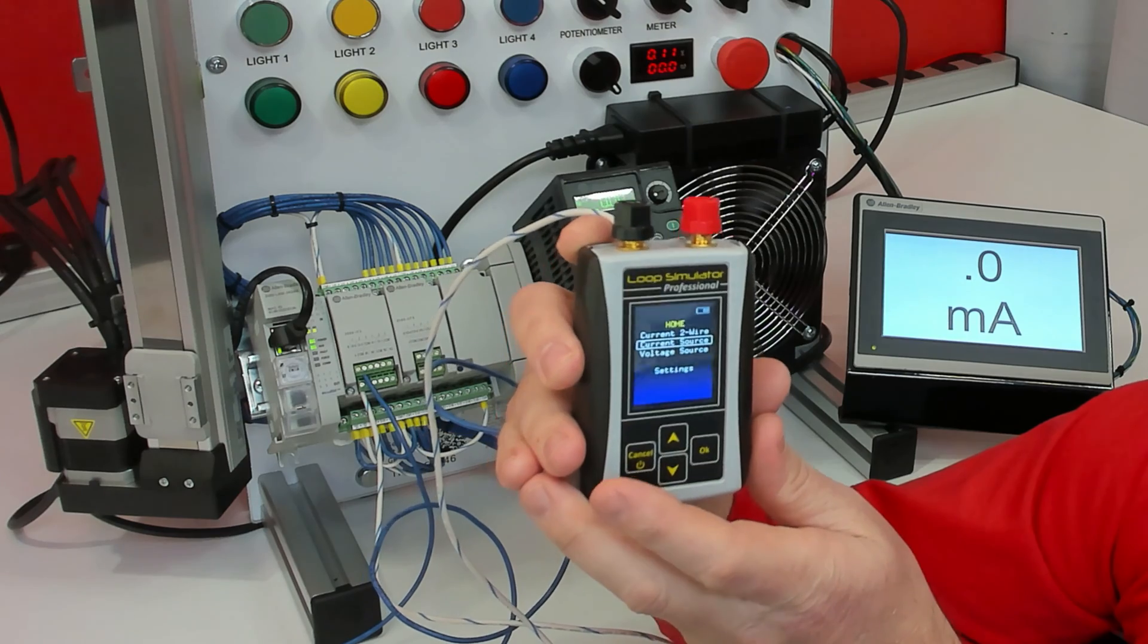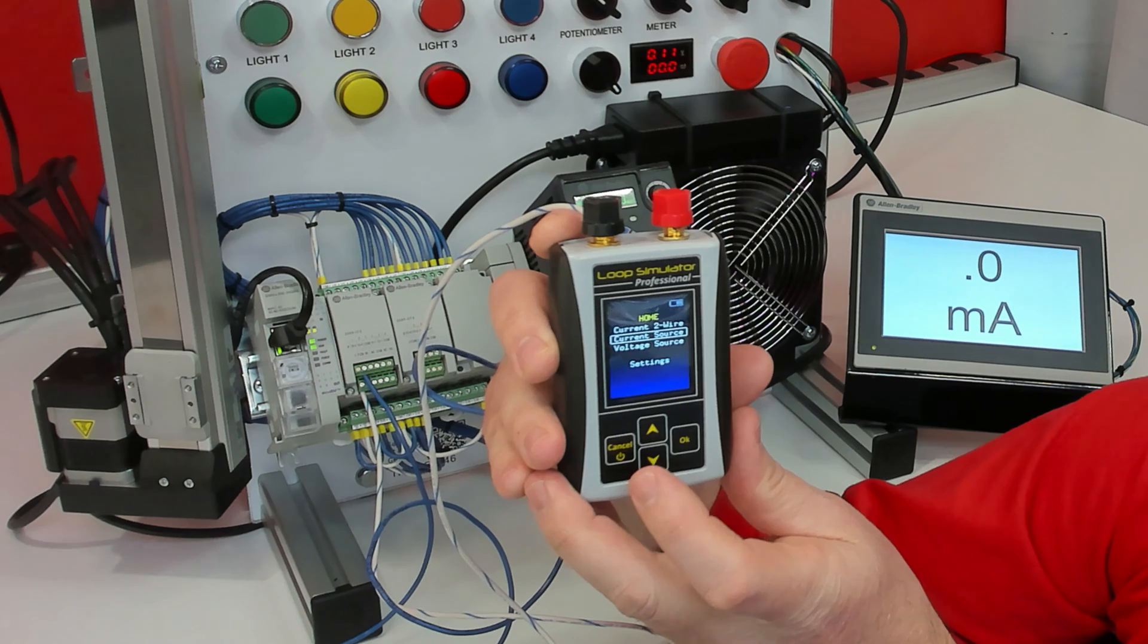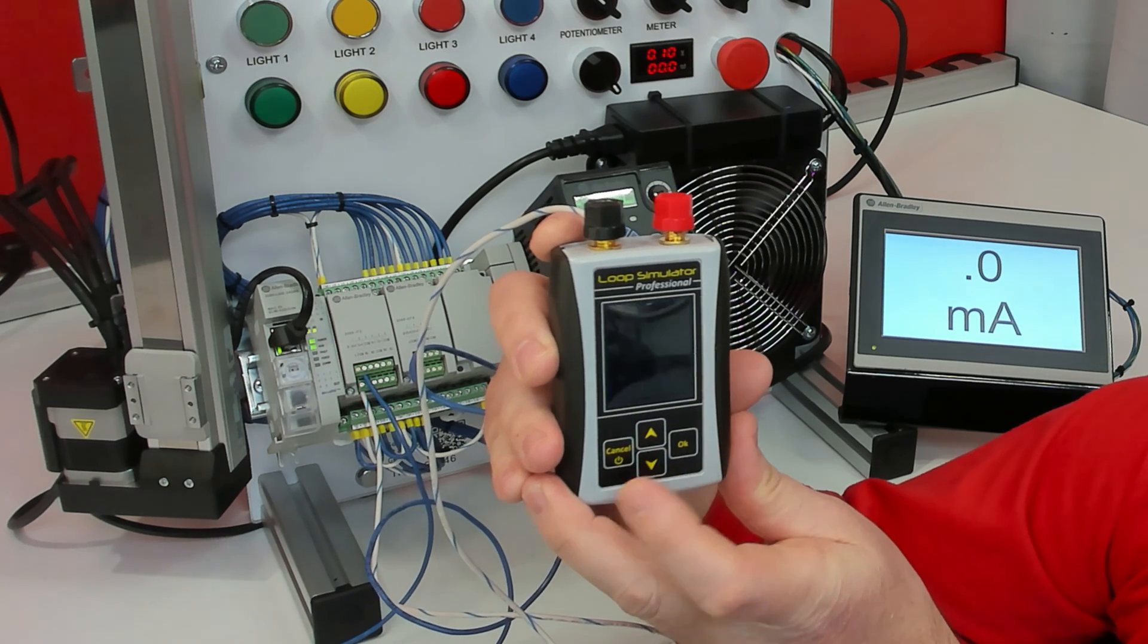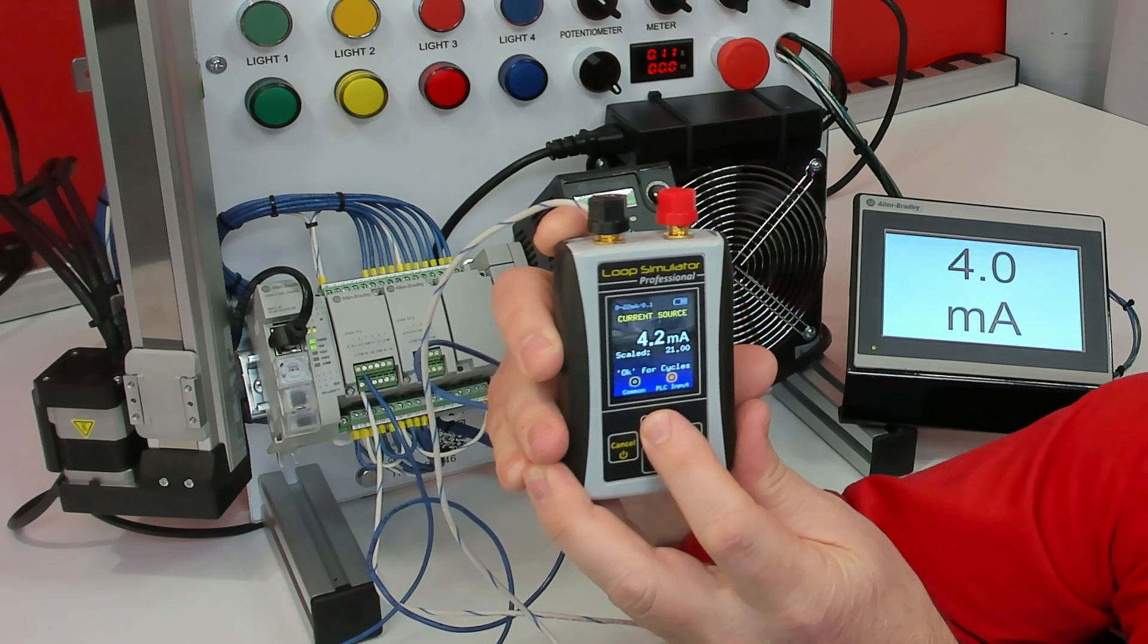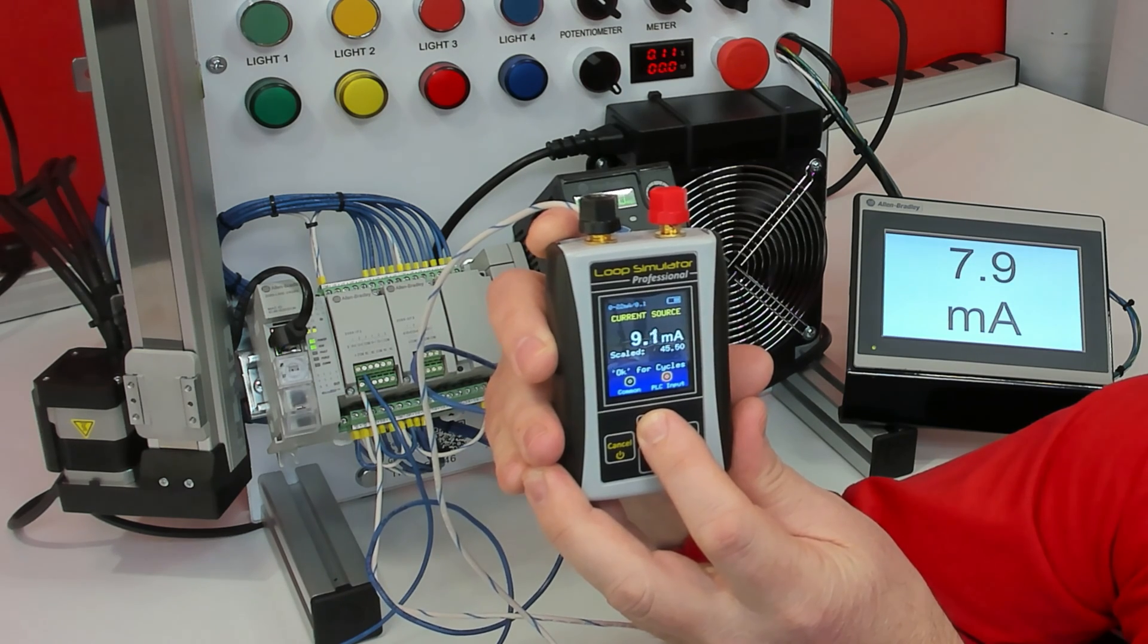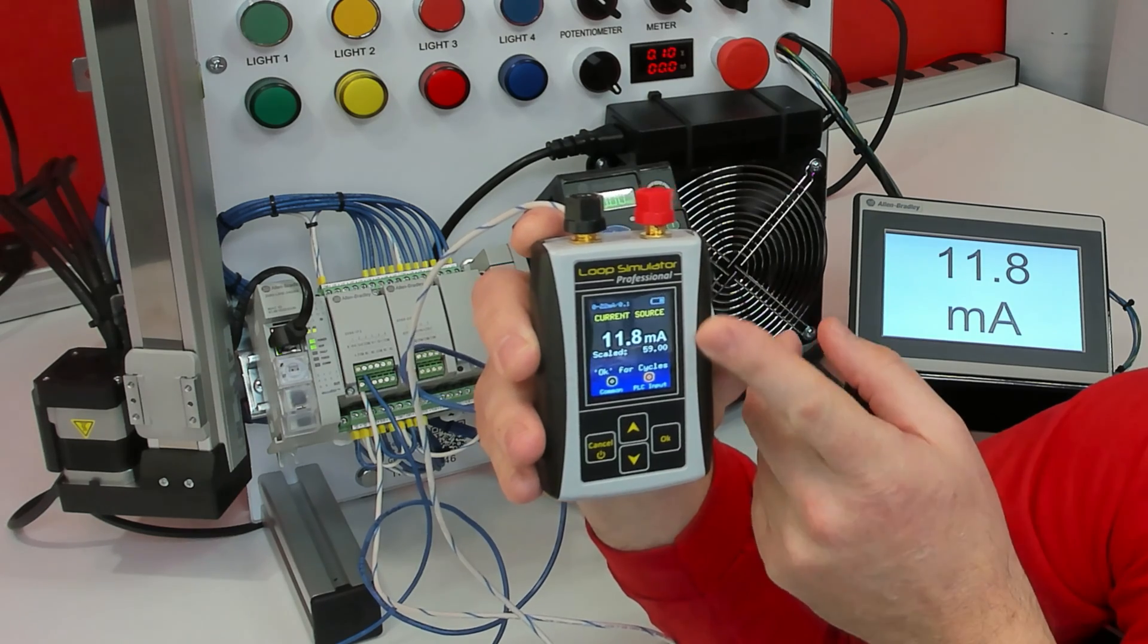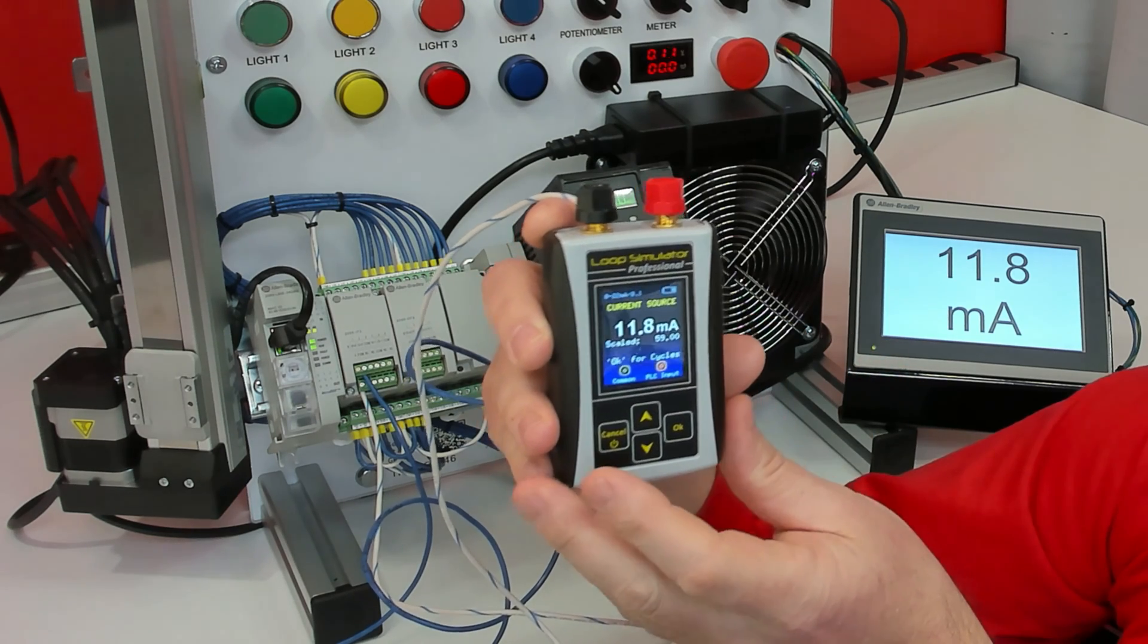We have a whole video manual that goes through every detail of the analog simulator, but I just want to hit a couple of things. So I'm going to go into current source, simply hit the up arrow, and that changes the value that you're simulating. It goes a little faster the longer you hold it. There's also a one-volt resolution mode that'll make it increase and decrease even faster.